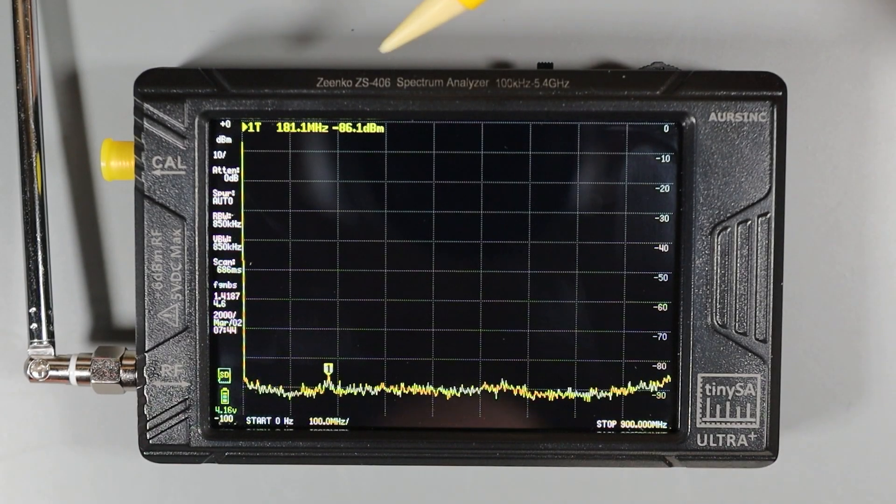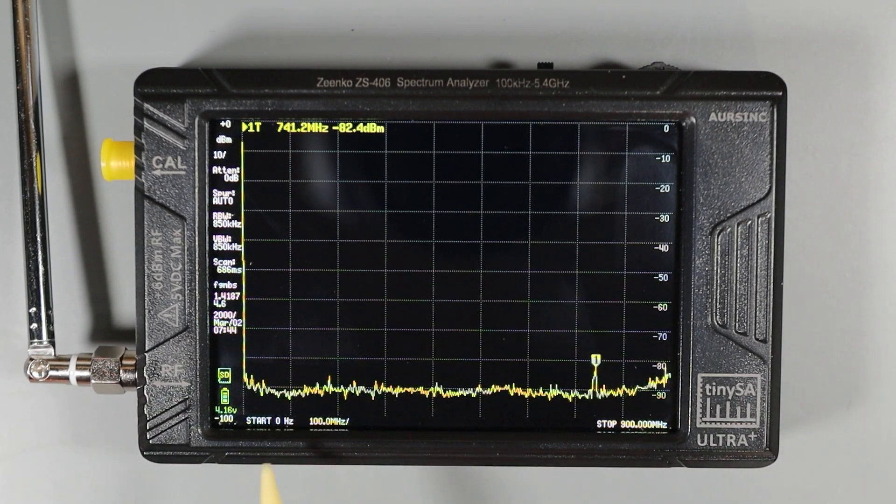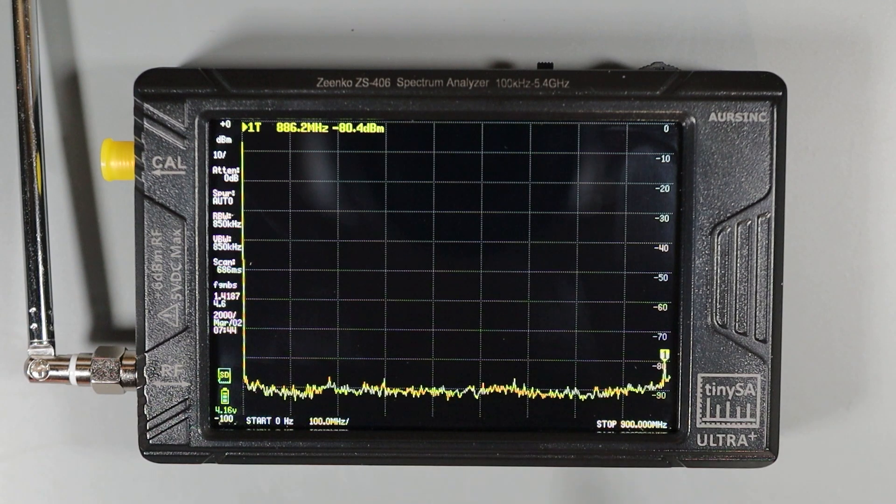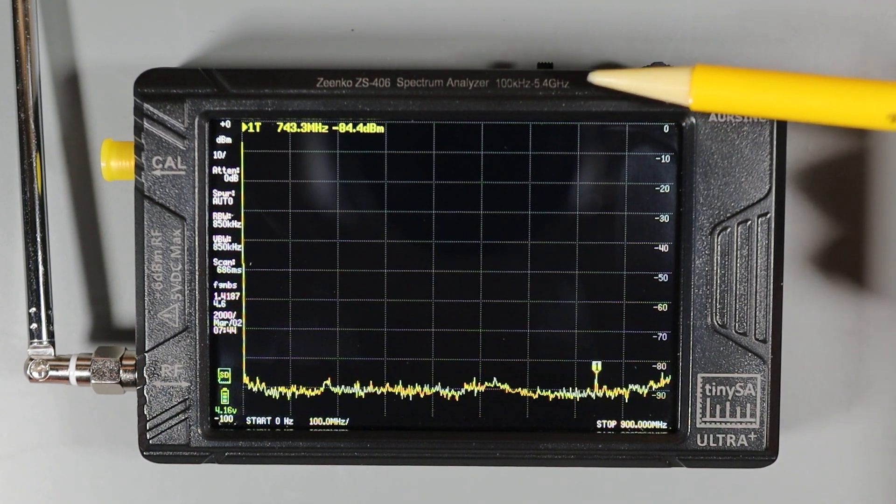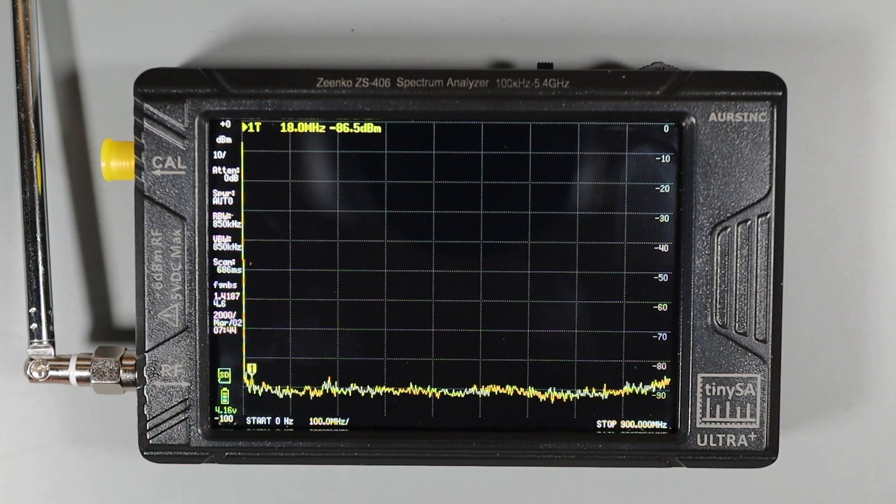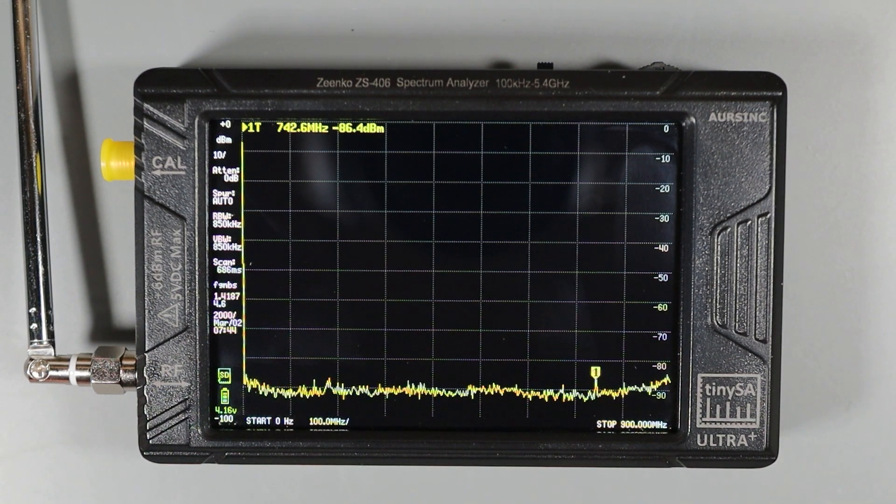This TinySA is a ZS406 model and that means by default it starts off in spectrum analyzer mode measuring between 0 and 900 megahertz. Now this TinySA Ultra is capable of measuring up to 5.4 gigahertz in ultra mode and we'll look at that later in the video.